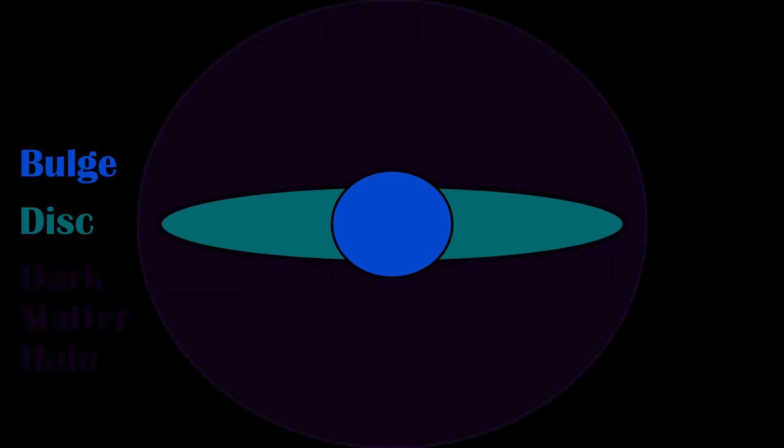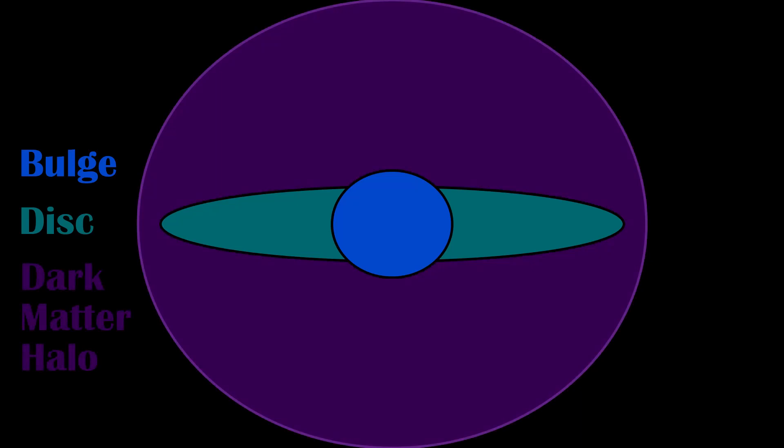Finally, there's the dark matter halo, which is a sphere around the entire galaxy which extends well beyond the bulge and the disc. It is here where dark matter is supposedly held.